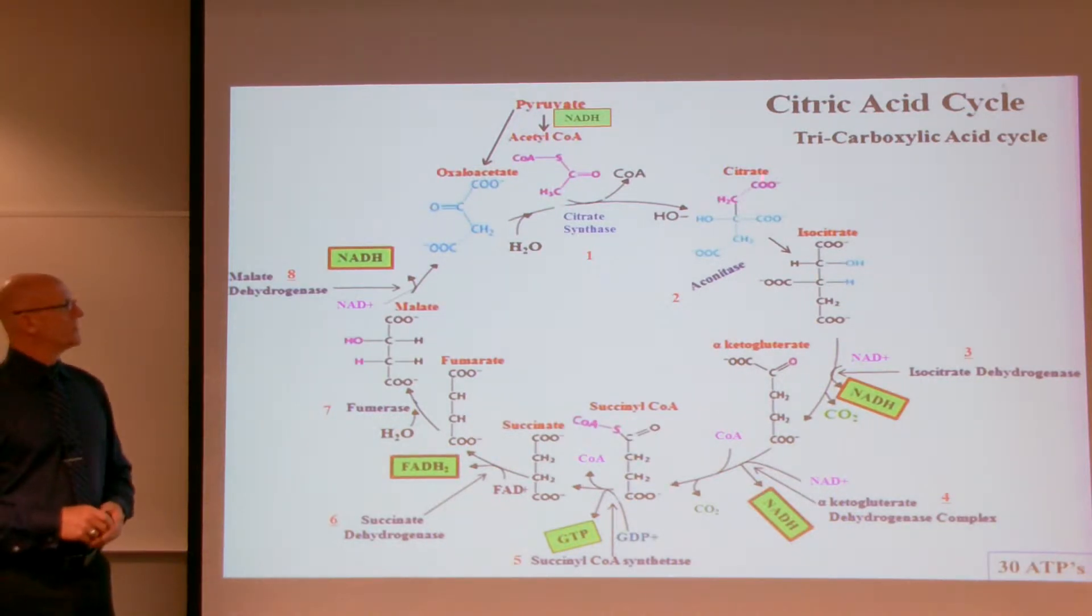So after citrate, we're going to have a dehydration. A water molecule is going to come out, yielding cis-aconitate, and then the water molecule will come back in to yield isocitrate. So basically, I've eliminated the dehydration and the hydration. The purpose is to get citrate into its isomer, isocitrate, which is also a six-carbon molecule.